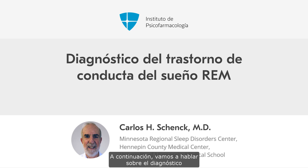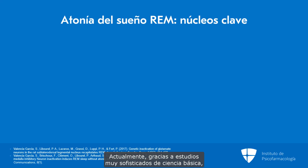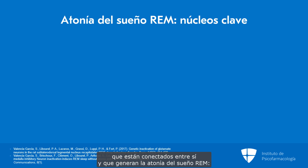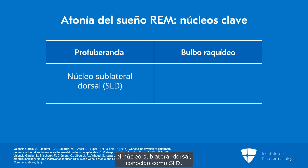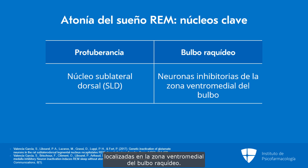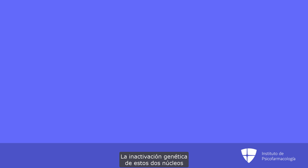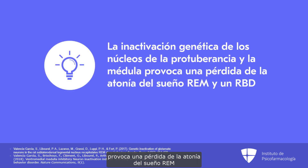I will now talk about diagnosing REM sleep behavior disorder. We now know through very elegant basic science studies that there are two key linked brainstem nuclei that generate REM atonia. One is in the pons and the other is in the medulla. The pontine tegmentum has the sublateral dorsal nucleus, known as the SLD, that is linked with the ventral medial medulla inhibitory neurons in the medulla. Genetic inactivation of these two nuclei resulted in loss of REM atonia and REM sleep behavior disorder in rats.